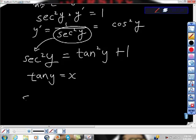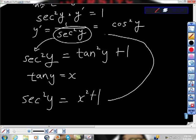And if we substitute tan y for x, we can tell that secant squared y equals x squared plus 1. And then if we substitute back to here, then it will make y prime equals 1 over x squared plus 1.